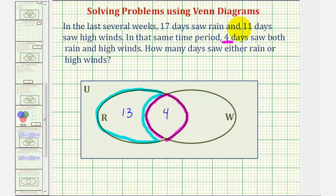We're also told that 11 days saw high winds, so there are 11 days in set W. But again, four of them are already accounted for. Since 11 minus four equals seven, there would be seven days in this region to represent the days that only saw high winds.